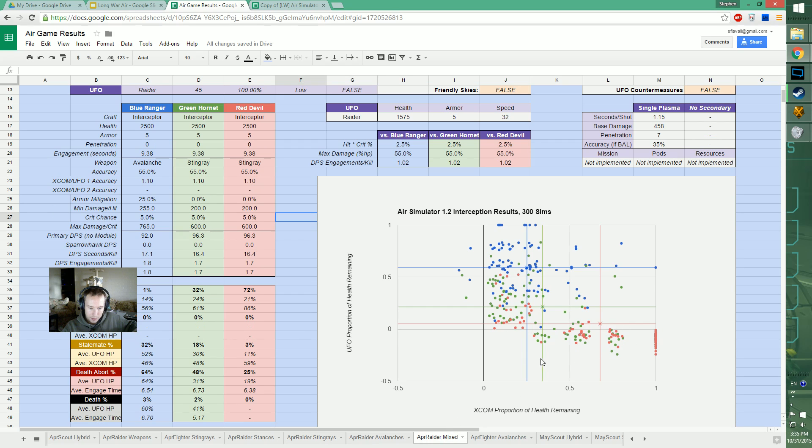So what you can do is go for a mixed intercept. This gets your Stingray cluster closer to zero because you're dealing one or two hits with an Avalanche, which helps you get that sixth Stingray cluster over the zero percent health line.